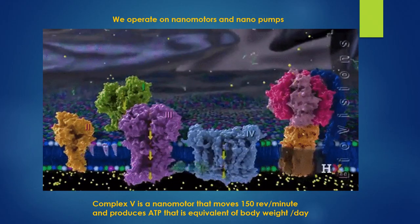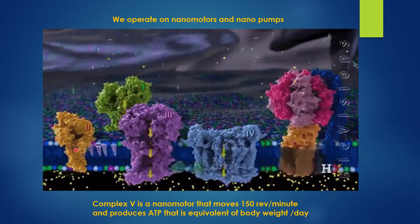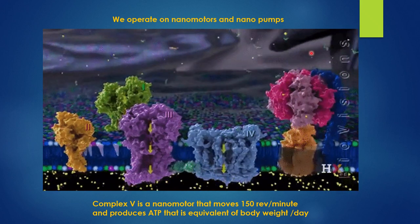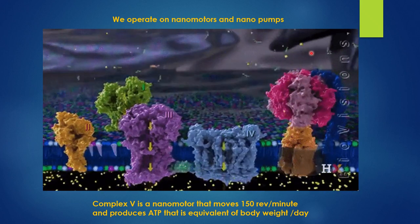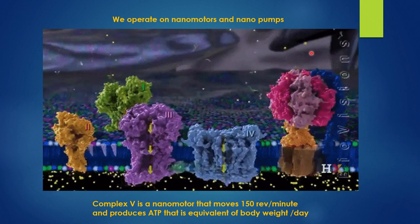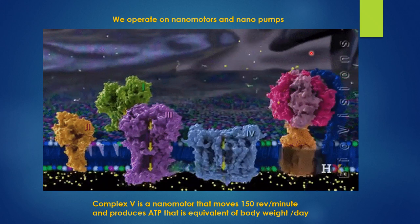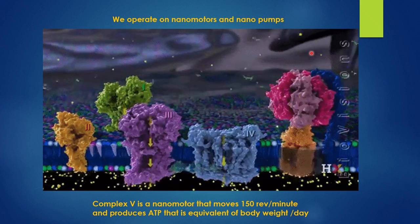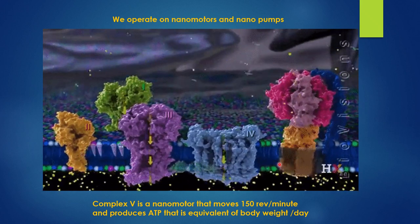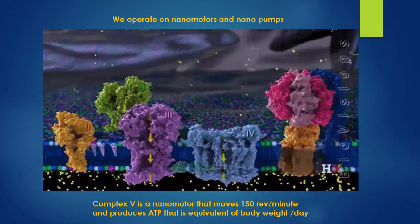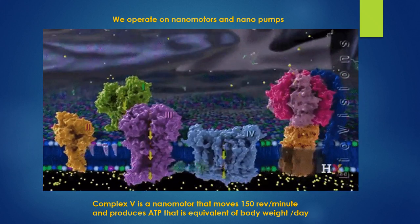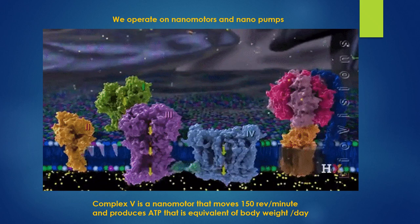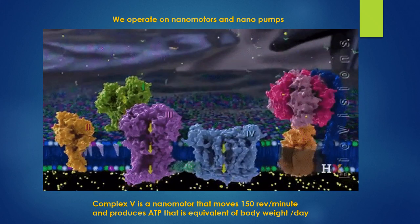These are the different complexes — electrons being transferred from one complex to the next. The movement of electrons sounds like electricity, and it is. They measured the voltage in the mitochondria at about 150 millivolts. The motor rotates at about 150 revolutions per minute, making ATP equivalent to your body weight per day. If you're 200 pounds, you're making 200 pounds of ATP a day. Isn't it amazing that we are made of nanomotors and nanopumps, powered by carbon and electricity — we're a hybrid.